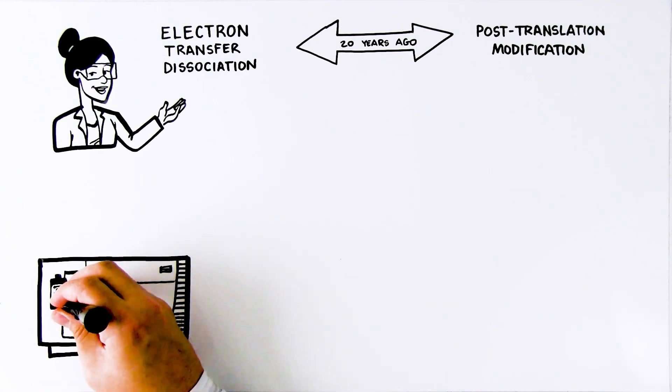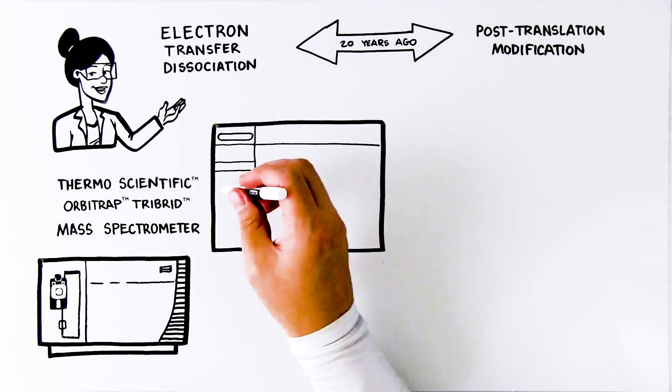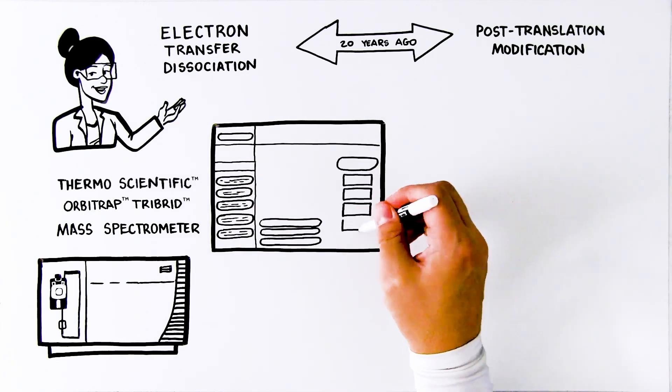ETD has evolved into a robust fragmentation technology on Orbitrap tribrid mass spectrometers, providing exemplary results while maintaining ease of use and versatility thanks to pre-built method templates in the method editor.